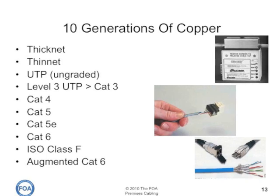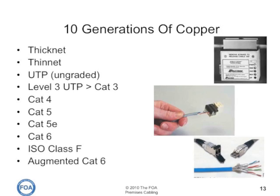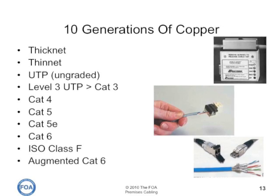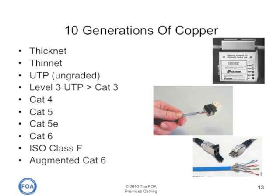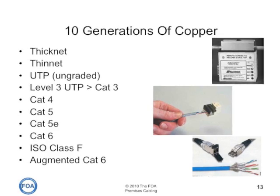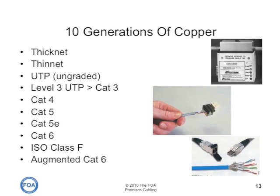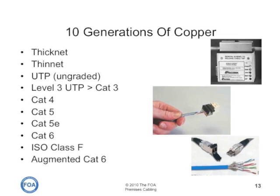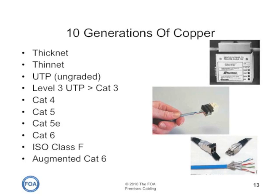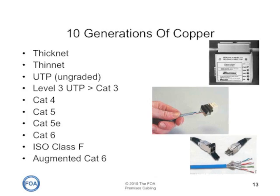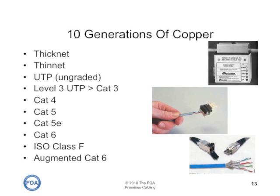In the same time frame, we've seen 10 generations of copper cabling required to support the increased speeds of Ethernet networks. Ethernet originally ran on Thicknet — large coaxial cable — then moved to Thinnet, a thin coaxial cable, and then to unshielded twisted pair. Now we've gone through six or seven generations, depending on how you look at it, of unshielded twisted pair, mostly using modular 8-pin connectors. With very high speeds of the latest systems, we've also seen some proposals for different types of connectors with better high-frequency performance.